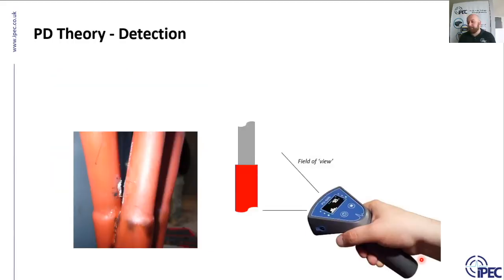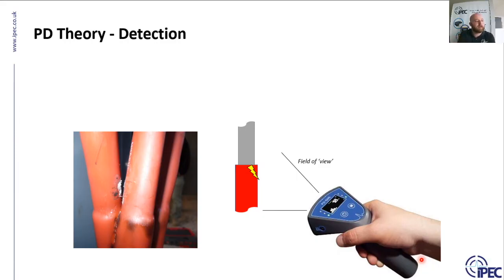Ultrasonic sensors are very directional — they generally have a field of view of about 30 degrees and are effective for about 2 to 3 meters. The advantage of ultrasonic is that location is determined at the same time as testing: as you swing the device around you're pinpointing the source simultaneously.